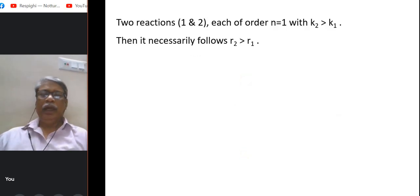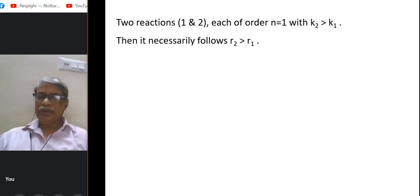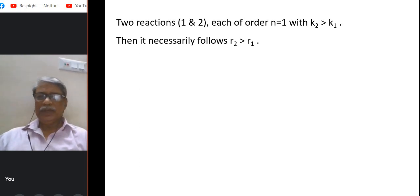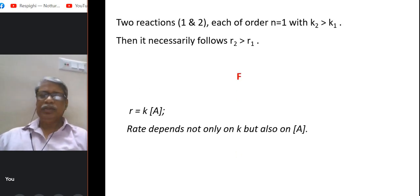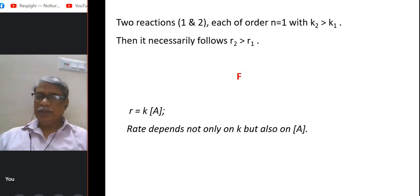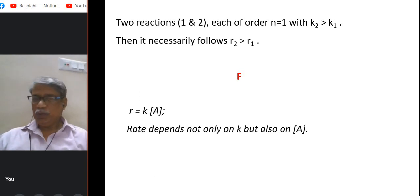Two reactions, each of order n = 1, but the rate constant k₂ > k₁. Does it necessarily follow that the rate of the second reaction is greater than the first? On first glance it may seem true, but it is false. Rate = k·[A] for first order. While the rate depends on k, it also depends on the concentration of A. So it is not necessarily true; the rate would be greater only if A is also greater.